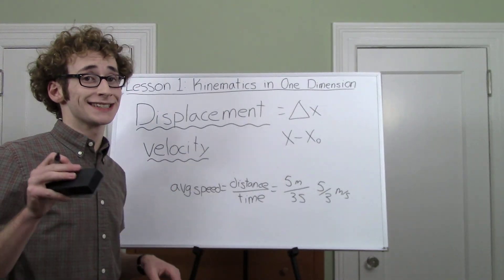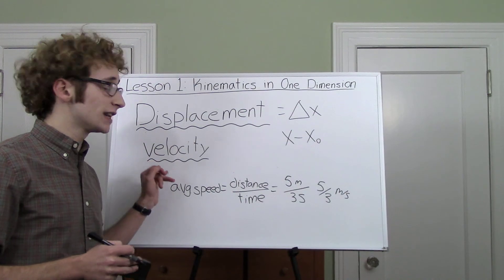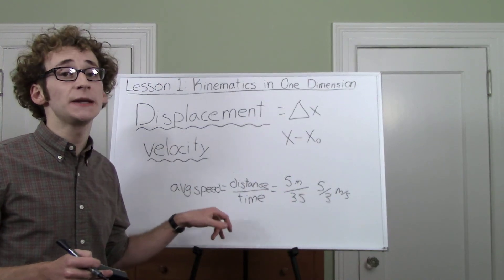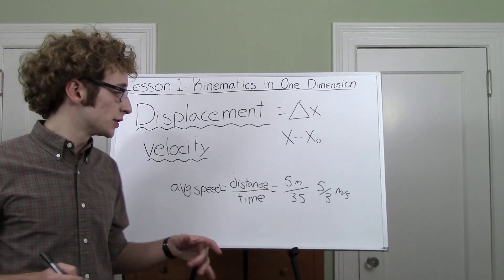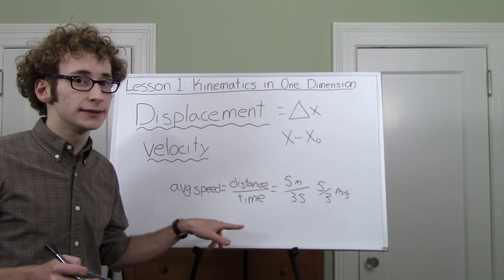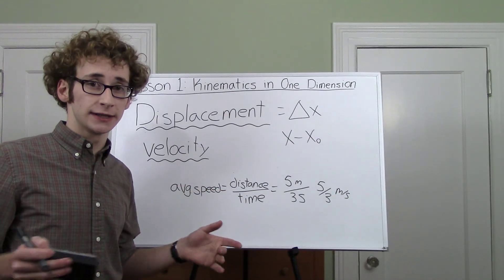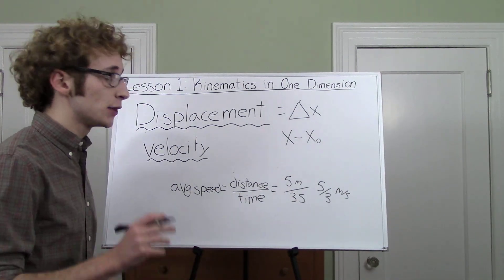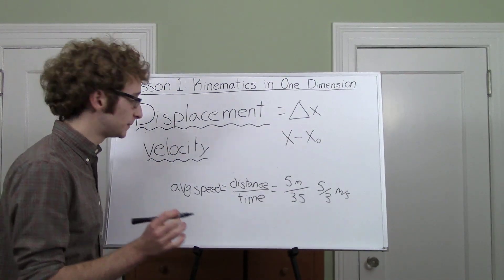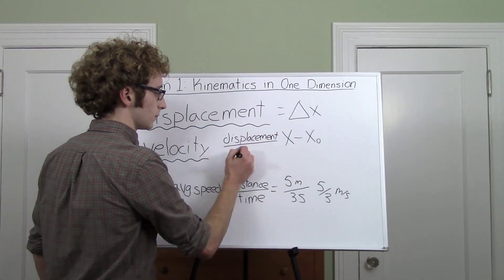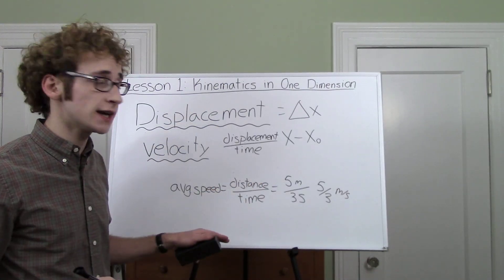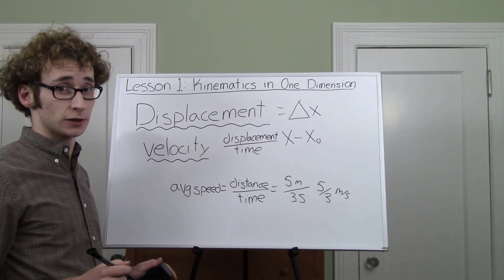You might be thinking, why are we going back to distance here? Didn't we just go over displacement? And I like the way you think. The physics version of distance is displacement. The physics version of speed is velocity. Now we don't just use velocity because it sounds cooler. No, we use velocity because it is just like speed, but it has direction. So while speed is a scalar, just a value, velocity is a vector. It's a value with a direction. And the way that we find velocity, it's very similar to finding speed. Speed is distance over time. Velocity is displacement over time.